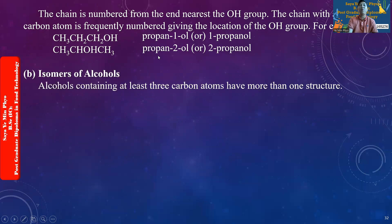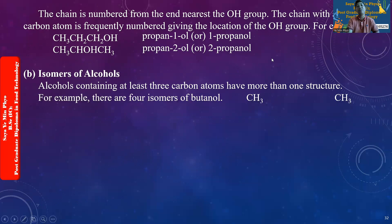The chain must have at least three carbon atoms. It can have more than one, for example there are four isomers.